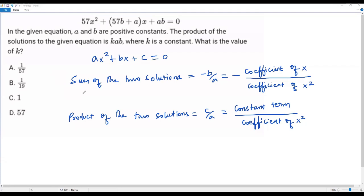Now let's go to our problem. Product of the two solutions is given in the question itself. So what is it? It's kab. So we can replace this phrase by k times ab equals c. C is the constant term in the quadratic equation. What is the constant term in our quadratic equation? That is ab.